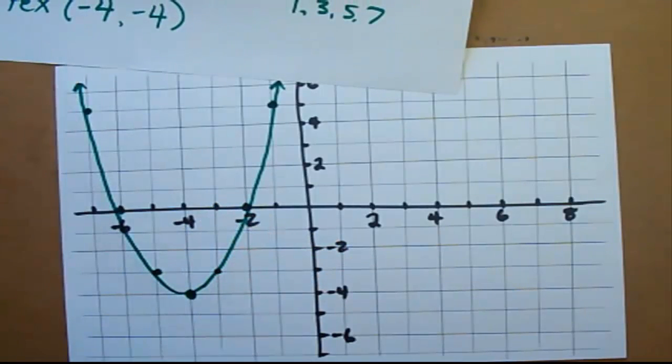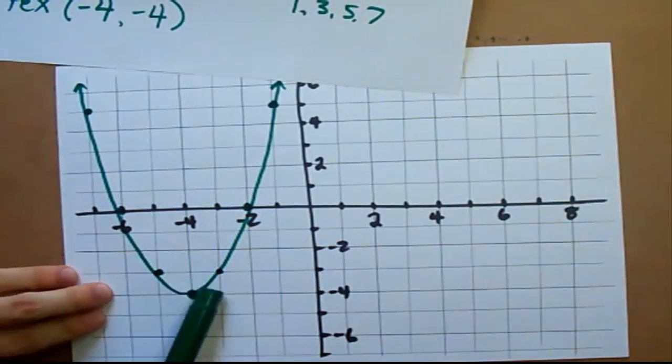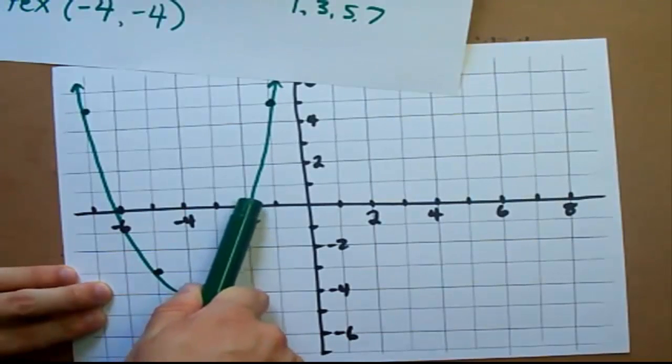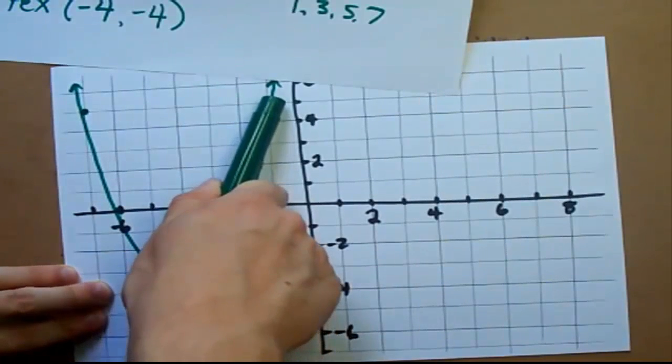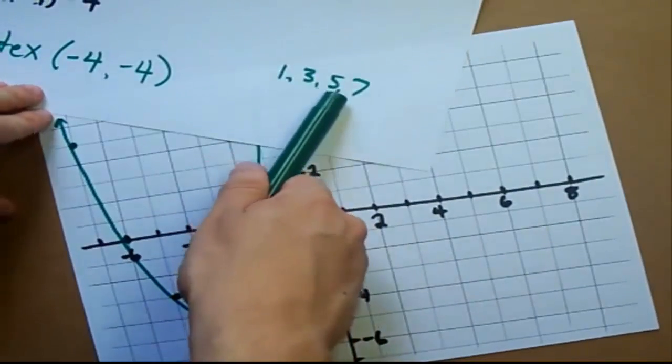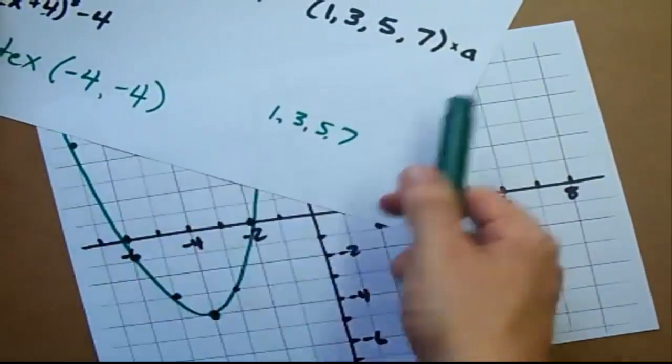And you have the parabola. Over 1, up 1, over 1, up 3, over 1, up 5, and if you had room we could go over 1, up 7, up 9, etc.